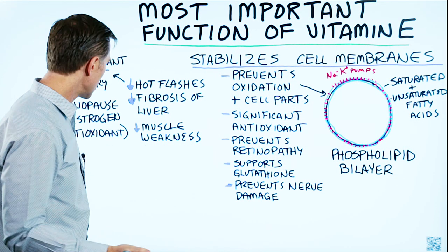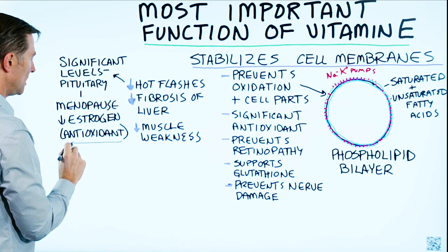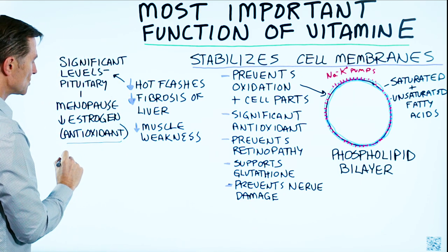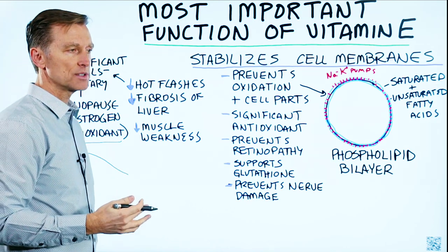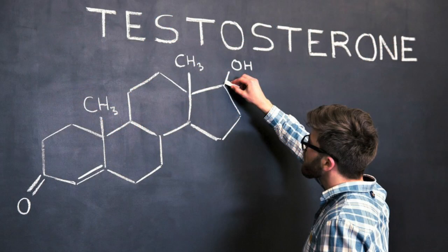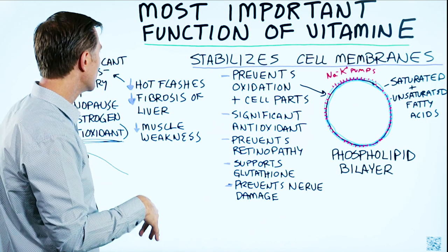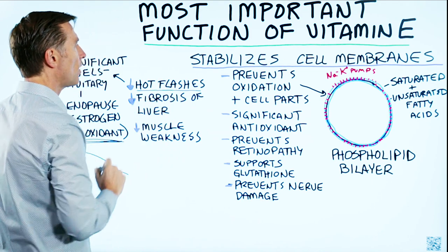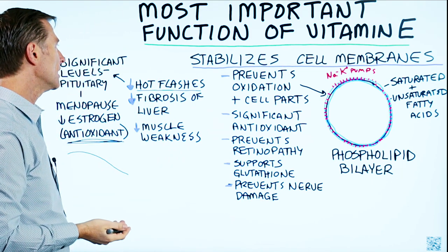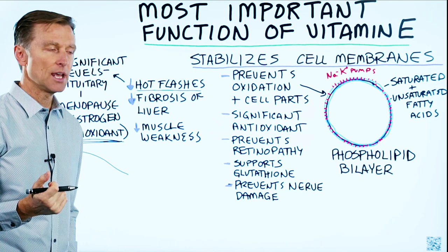One of the functions of estrogen is to act as an antioxidant. So during menopause, when estrogen goes down along with other hormones like progesterone and even testosterone, if you don't have enough vitamin E to compensate, hot flashes can kick in. This is why vitamin E as a remedy will help to reduce hot flashes.